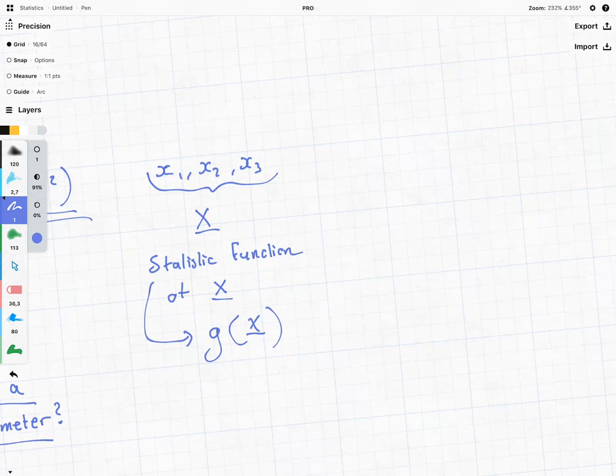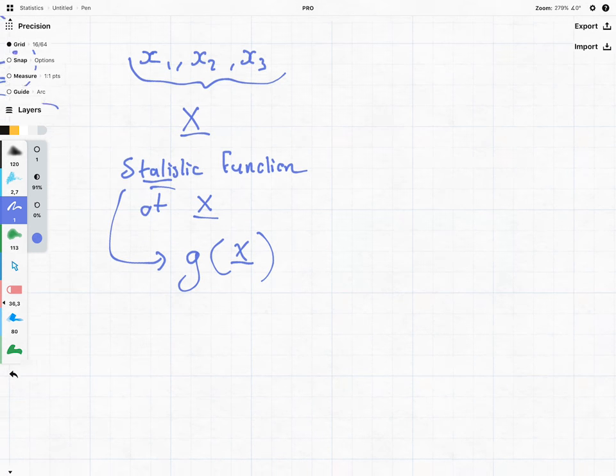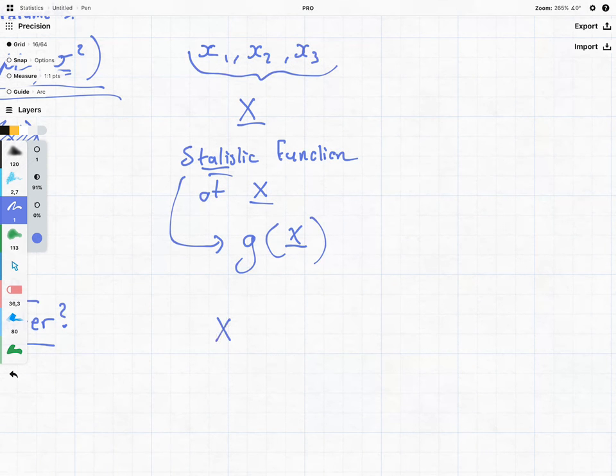Now, one of the most famous statistics of all time is something known as x bar, because what x bar is, it is the sum of the observations divided by the number of observations. And this x bar is also known as the sample mean.